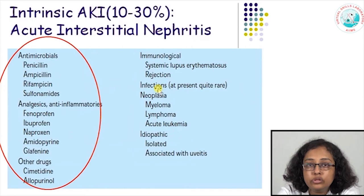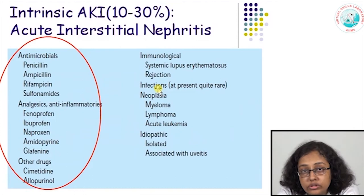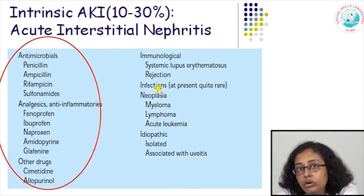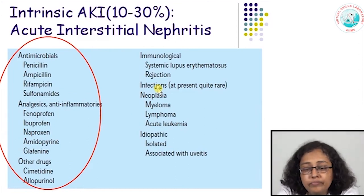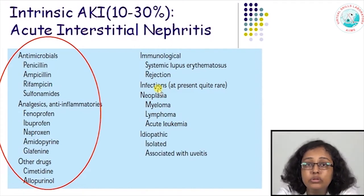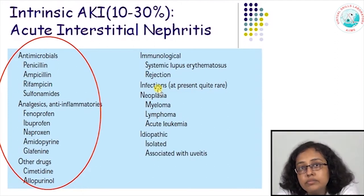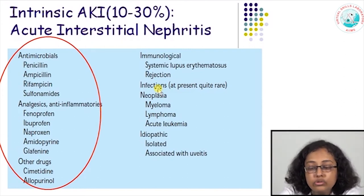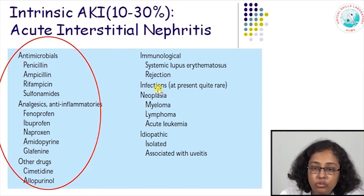Sometimes the glomeruli, tubules, and vessels are spared but only the interstitium is affected — known as acute interstitial nephritis, which usually leads to a non-oliguric kind of acute renal failure. Very common causes include antibiotics, especially penicillin, ampicillin, and sulfonamides, as well as NSAIDs — painkillers very easily available over the counter — and a host of other drugs. Sometimes autoimmune diseases like SLE may also present as acute interstitial nephritis, and rarely it may be idiopathic.